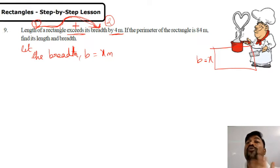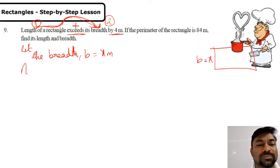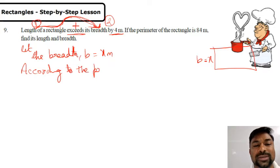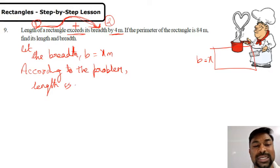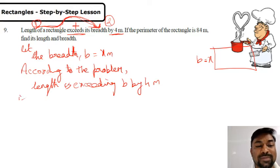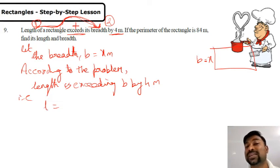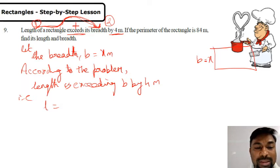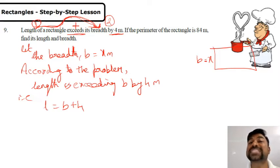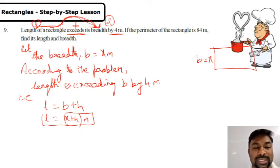We draw the rectangle: breadth is x meters. According to the question, the length is compared to the breadth and it exceeds by 4 meters. Length exceeds breadth by 4 meters — exceeds means plus. So the length equals breadth plus 4 meters. Since breadth is x, length equals x plus 4 meters.